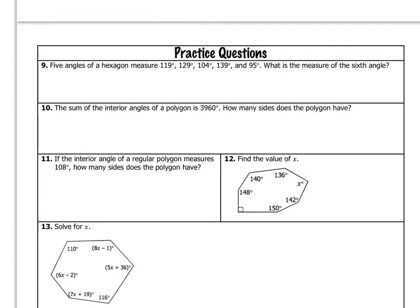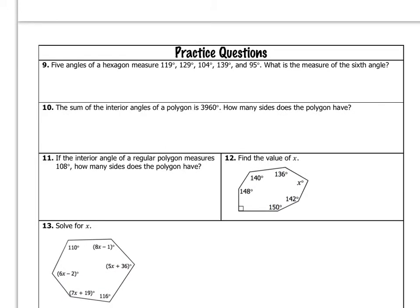Now, just some general practice questions. Number nine: five angles of a hexagon measure 119 degrees, 129 degrees, 104 degrees, 139 degrees, and 95 degrees. We need to find the measure of the sixth angle. First, I need to know the sum of the interior angles in a hexagon. Using the formula: S equals 6 minus 2, that quantity times 180, so 4 times 180, which is 720 degrees. Since that's the sum of all angle measures, I add up the five given angles plus x, and they all must equal 720 degrees.